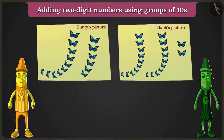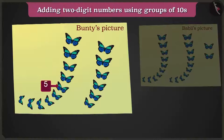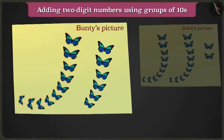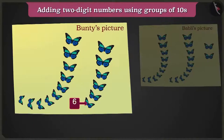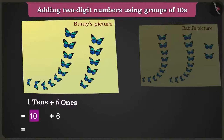Hey Yellow, look at this picture of butterflies. Here on Bunty's drawing paper, there are one, two, three, four, five, six, seven, eight, nine and ten — here is a group of ten — and another one, two, three, four, five and six butterflies. Bunty has made one ten that is ten and six ones that are six. So ten plus six are sixteen butterflies.